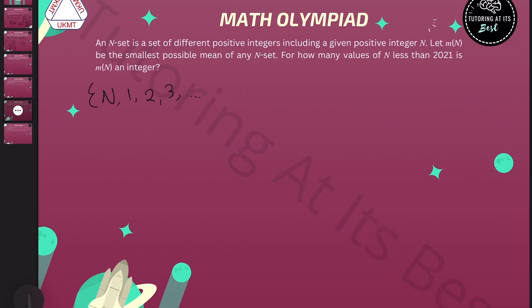If we consider what happens when we add those in, starting with the set just containing n, then I add in one, what will happen to the mean? Well, the mean will be n plus one over two.